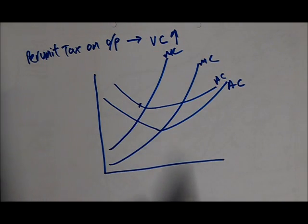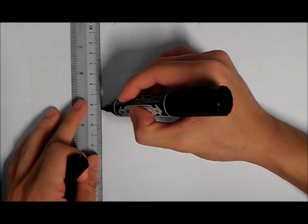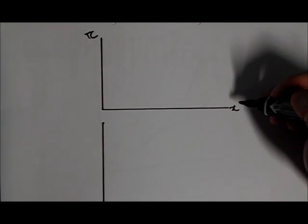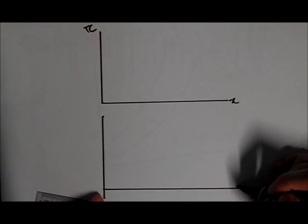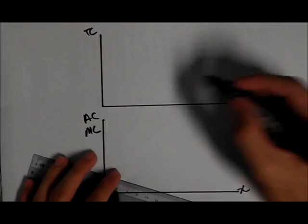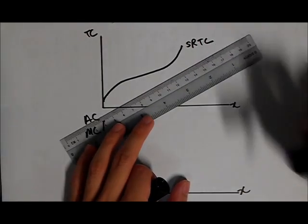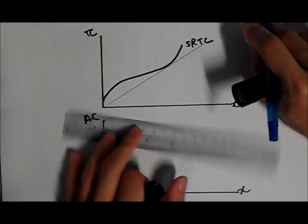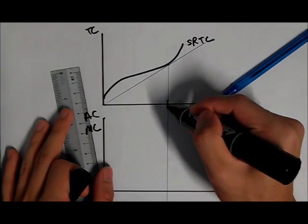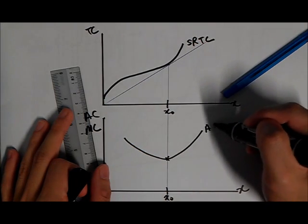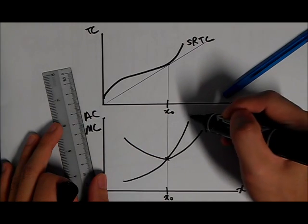We have to go back to how we derive the average cost and the marginal cost. So I'll try to make this very neat. Let me use a ruler right here. Okay, so this is my total cost. I hope you can see. This is my average cost and my marginal cost. So let's start with one cost curve first. Short run total cost. So we derive the total cost, the average cost and the marginal cost first. So we know that this is the lowest point. Average cost, marginal cost.